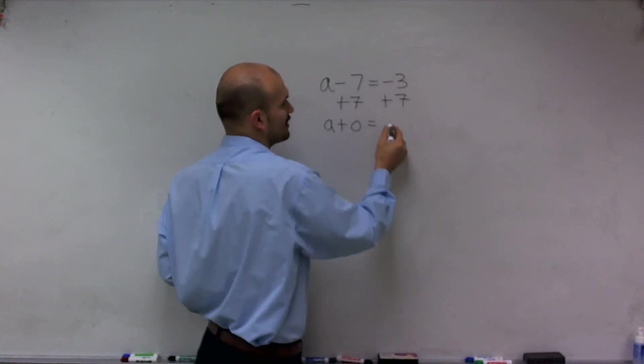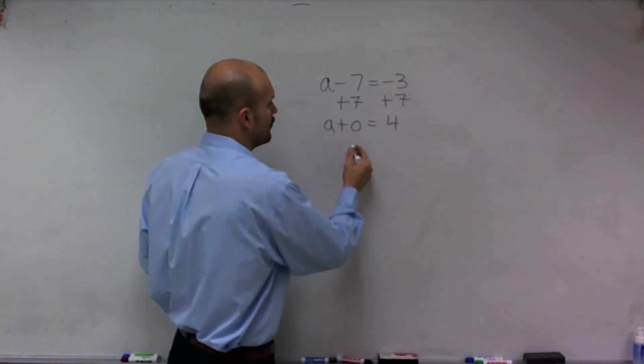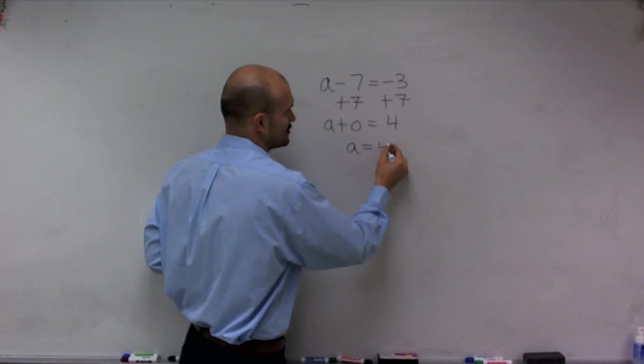Therefore, negative 3 plus 7 equals 4. Now in the statement, I have a plus 0 equals 4, where I can simply just say a is equal to 4.